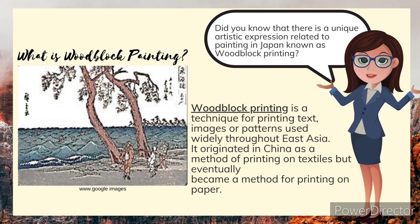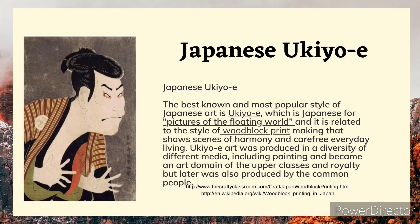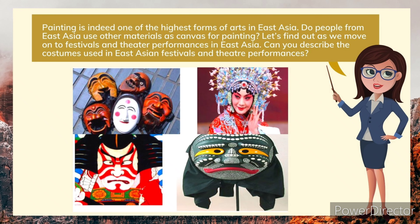There is a unique artistic expression related to painting in Japan known as woodblock printing. Woodblock printing is a technique for printing text, images, or patterns used widely throughout East Asia. It originated in China as a method of printing on textiles but eventually became a method for printing on paper. The best known and most popular style of Japanese art is Ukiyo-e, Japanese for 'pictures of the floating world,' related to the style of woodblock printmaking that shows scenes of harmony and carefree everyday living. Ukiyo-e art was produced in a diversity of different media, including painting, and became an art domain of the upper classes and royalty but later was also produced by the common people.